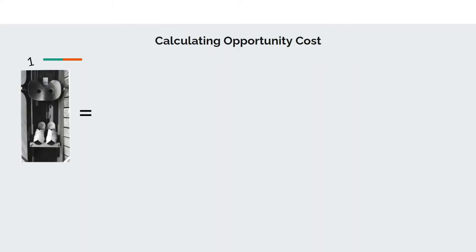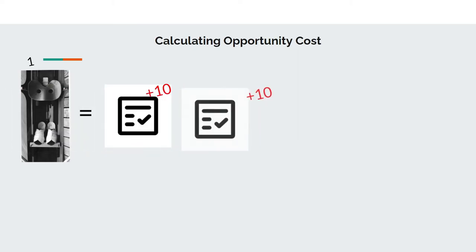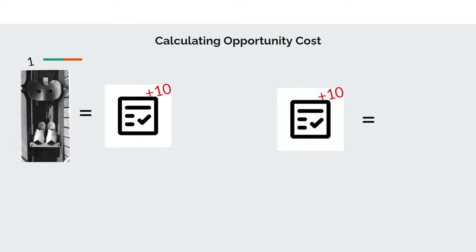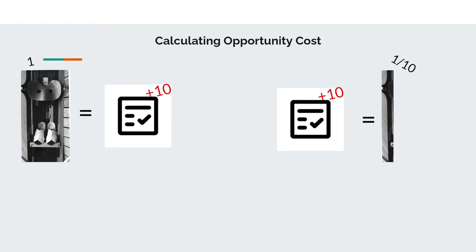When calculating opportunity costs, you compare how much you gain from the byproduct of the first choice to how much you lose from the byproduct of the second choice. In Ryan's case, one seat equals 10 additional points, which means his opportunity cost for one seat in the boat is 10 points on the test, and one point on the test is one-tenth of a seat in the boat.